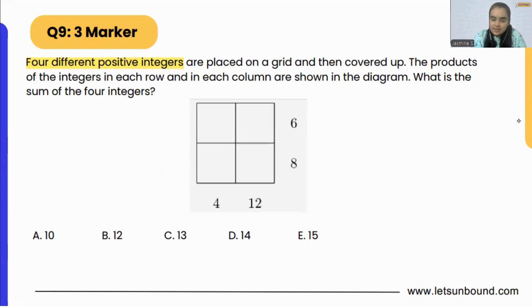So what is the sum of the four integers? In these four boxes, we have to put different integers. We cannot put two and two here or one and one here because they are asking us four different positive integers.